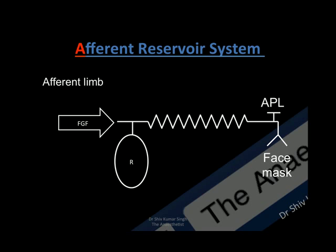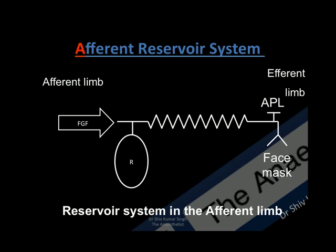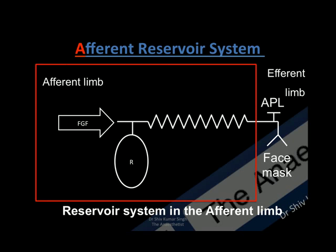The part within the rectangle is the afferent limb where the fresh gas flows are coming in. Since the reservoir system is very near to or within the afferent limb, this is called an afferent reservoir system. Where the gases are vented out, that becomes the efferent limb.